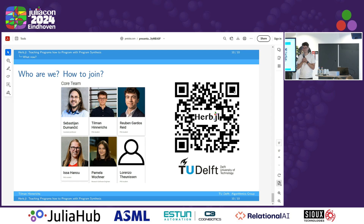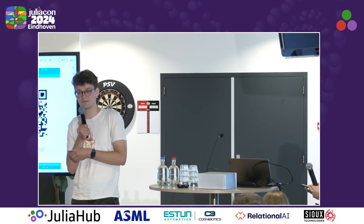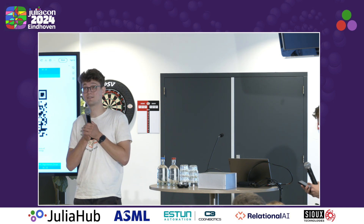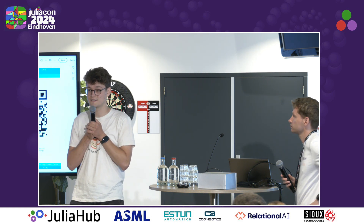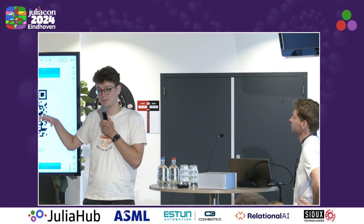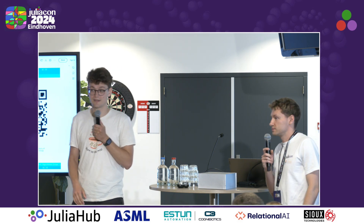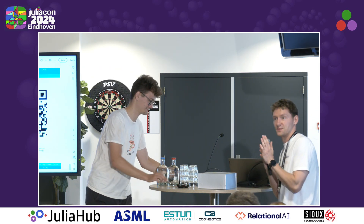One more question and then we'll switch to the next speaker. Just a quick question: why do you split up Herb into so many sub-libraries like Herb Search and so on? We had numerous discussions about whether to put this as a big monorepo or not. The reason for the modular approach is just the development workflow — we have a lot of different projects and students working on different sub-parts. In the last three months we had 20 working at the same time on this. It's a lot easier to manage and merge sub-components rather than everything all at once. Let's give a final round of applause for Tillman. That was a great presentation.